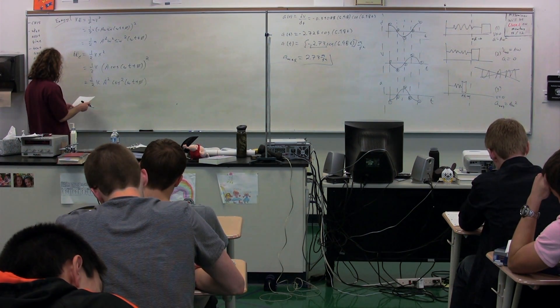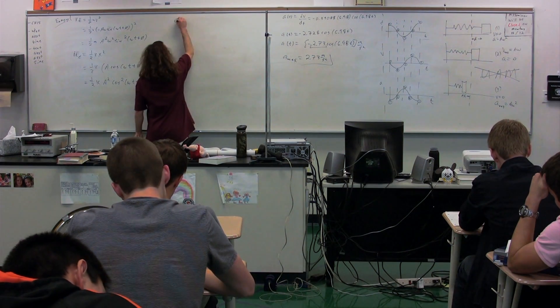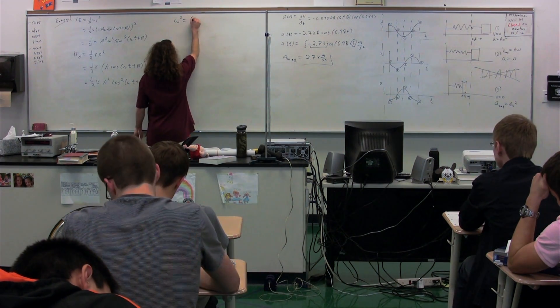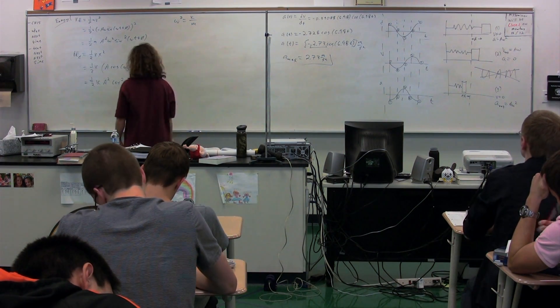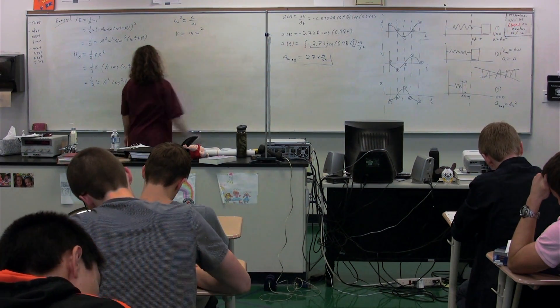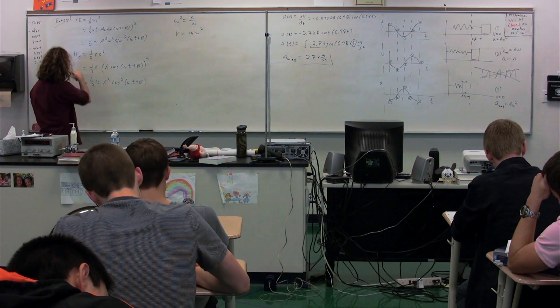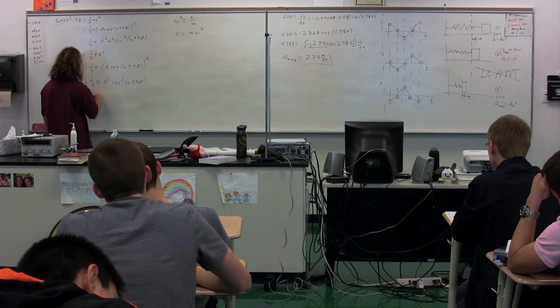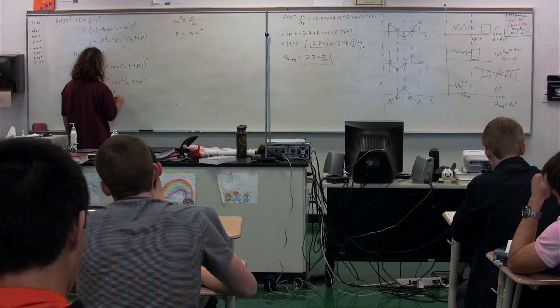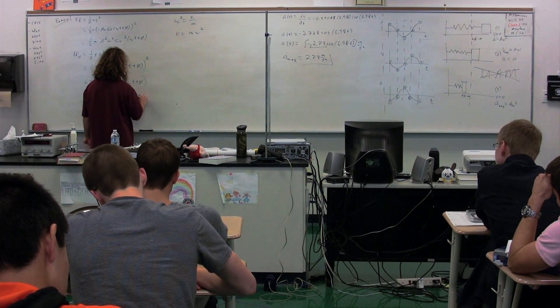Now, we know that omega squared is equal to k over m. So k is equal to m times omega squared. So I can substitute in for the spring constant here, m times omega squared. So this is one-half m times omega squared times A squared times the cosine squared of omega t plus phi.